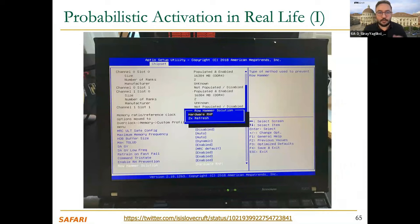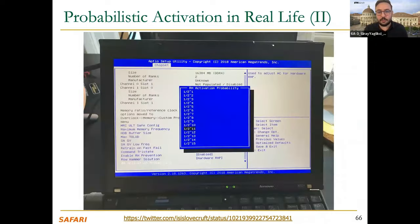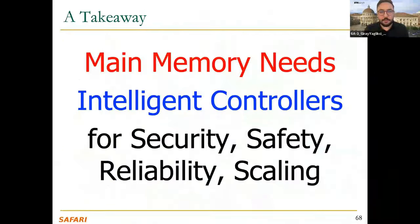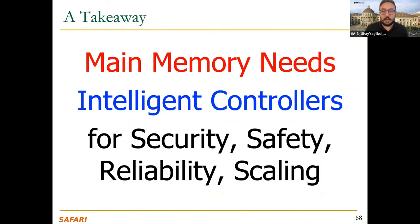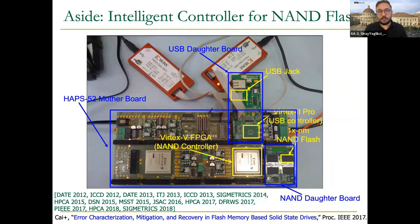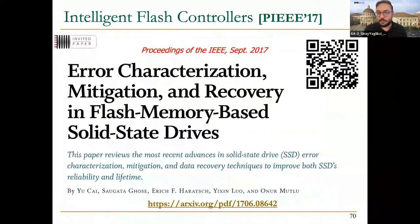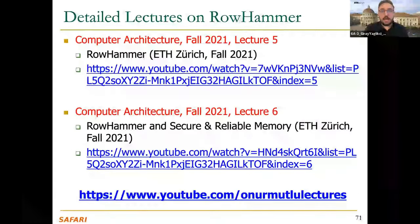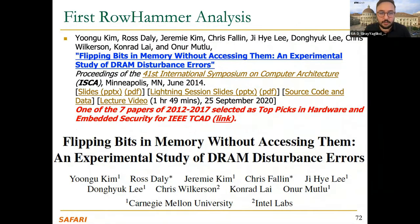PARA has some implementation requirements but they are not particularly challenging — we observe that PARA is already implemented in some systems. The takeaway from the Flipping Bits paper is that main memory needs intelligent controllers for security, safety, reliability, and scaling, and for rowhammer specifically we need intelligent controllers. We see similar intelligent controllers in NAND flash, and we need the same for DRAM. There are more detailed lectures on rowhammer available online.